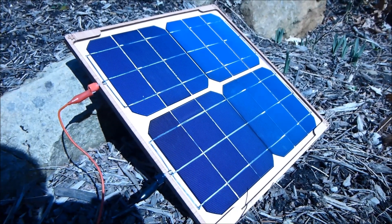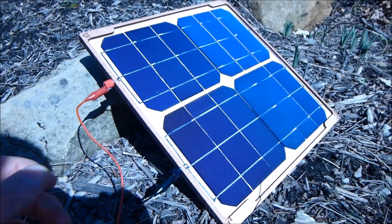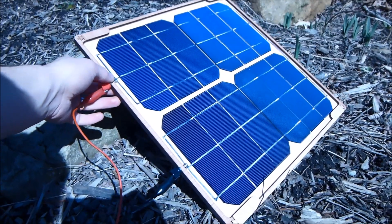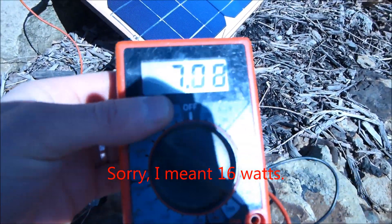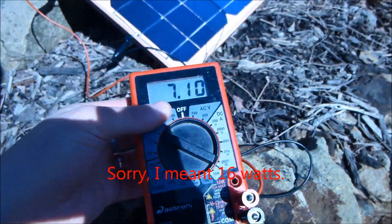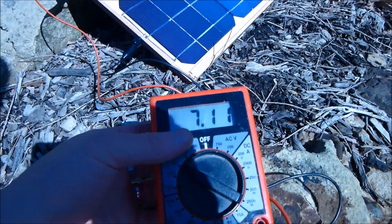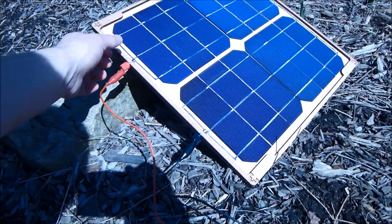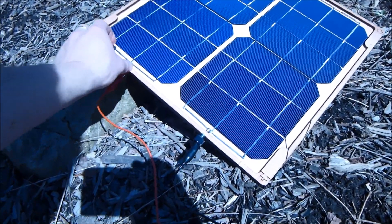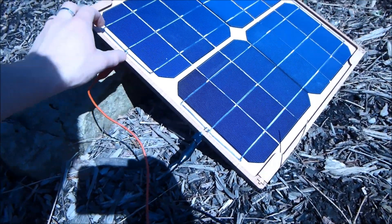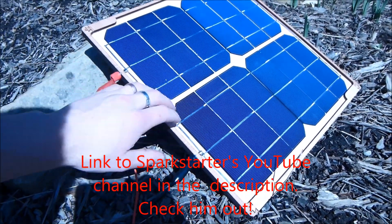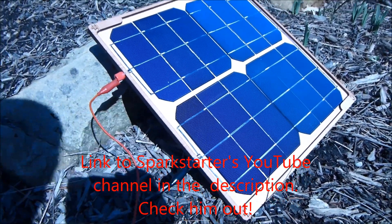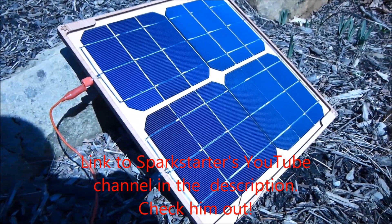Hello, this is MakerJ101, and in this video I'm going to show you how I make these solar panels. These produce about 20 watts at about 7-ish volts at about 2.3 amps. I'm actually building these for Spark Starter on YouTube for a class that he's doing. So I'm going to show you how I solder them up.